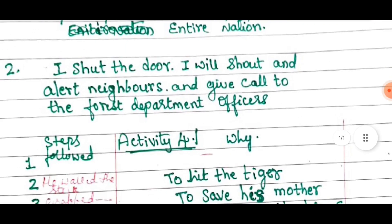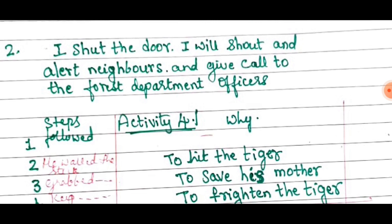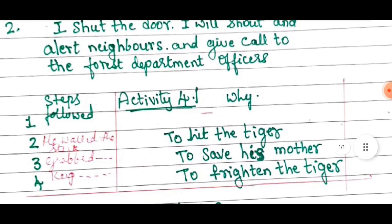The next one is activity 4.1. Based upon the story, questions are given about steps followed and why. For the why answers: first, Arjun — koti; second, to hit the tiger; third, to save his mother; and fourth, to frighten the tiger.